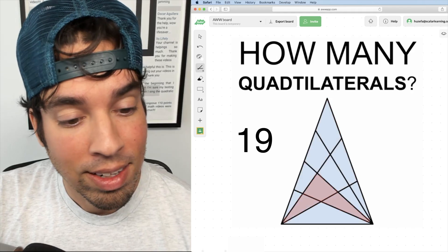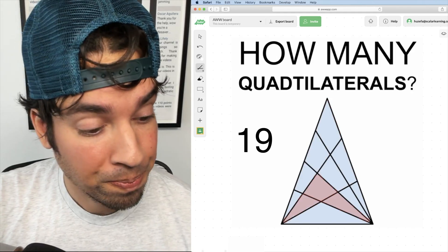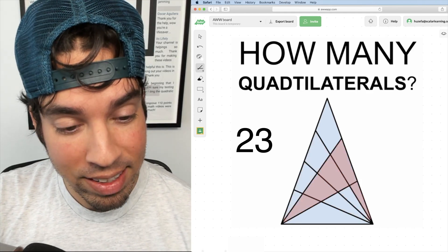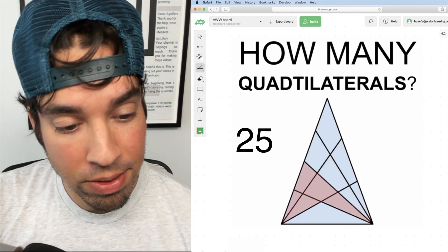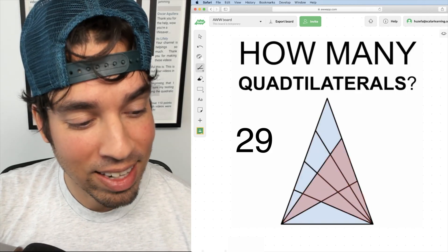Here we go. Nineteen, and we're starting from smallest and we're going to get bigger and bigger. Twenty, twenty-one, twenty-two, twenty-three, twenty-four, twenty-five, twenty-six, twenty-seven, twenty-eight, twenty-nine, thirty.